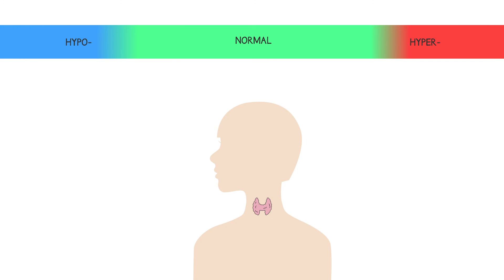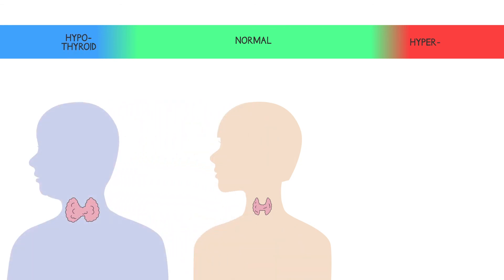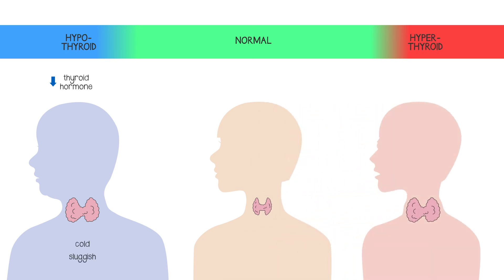For example, thyroid hormone affects your metabolic rate. Hypothyroidism is where levels of thyroid hormone in the blood are too low, and this can leave you feeling sluggish and cold. In hyperthyroidism, levels of thyroid hormone are too high, and this can leave you feeling hot and excitable.